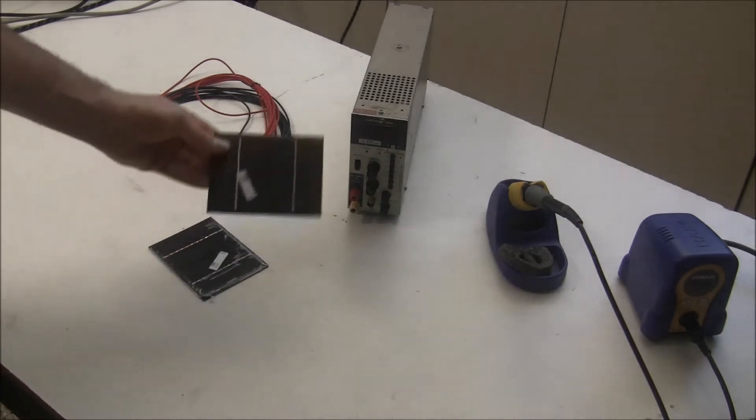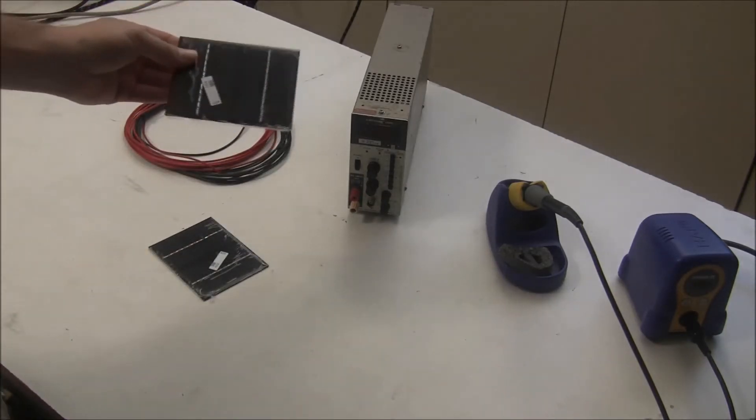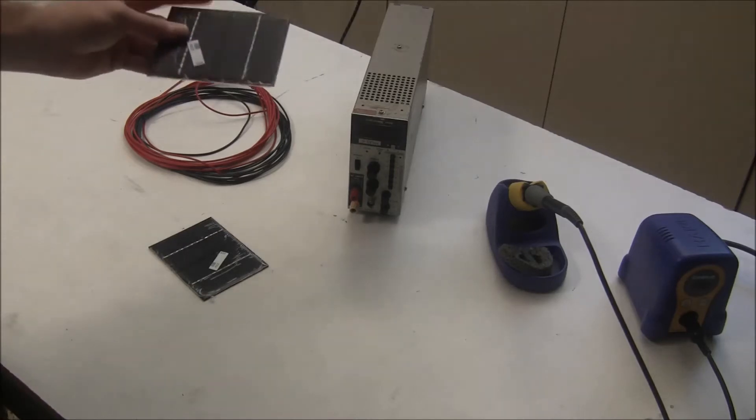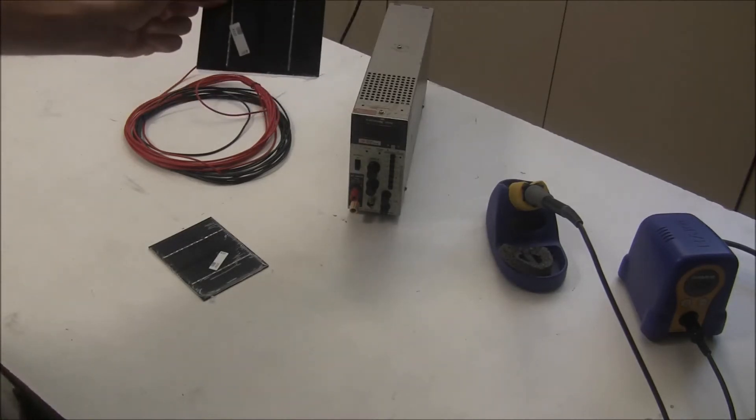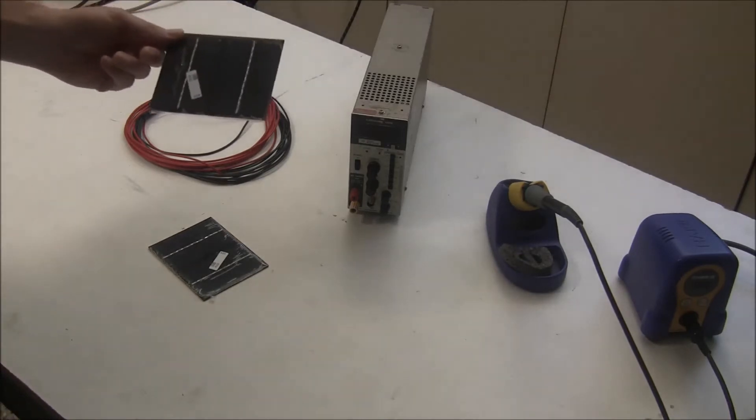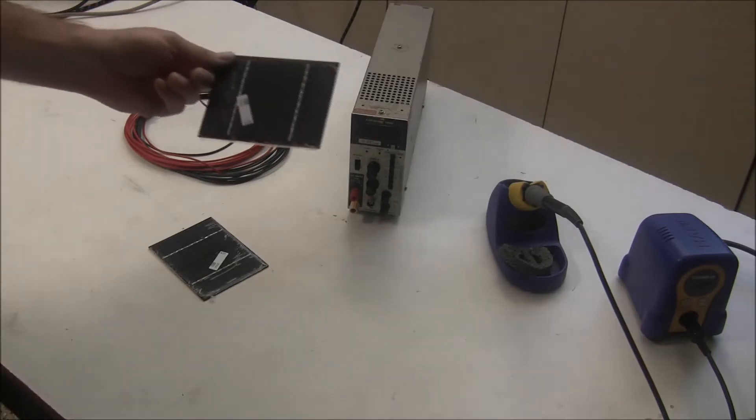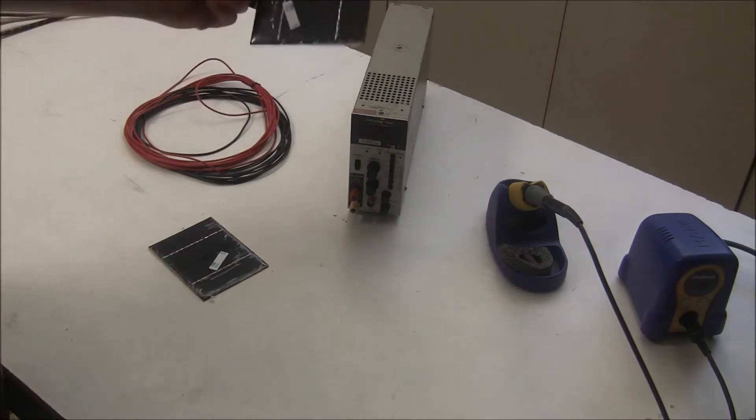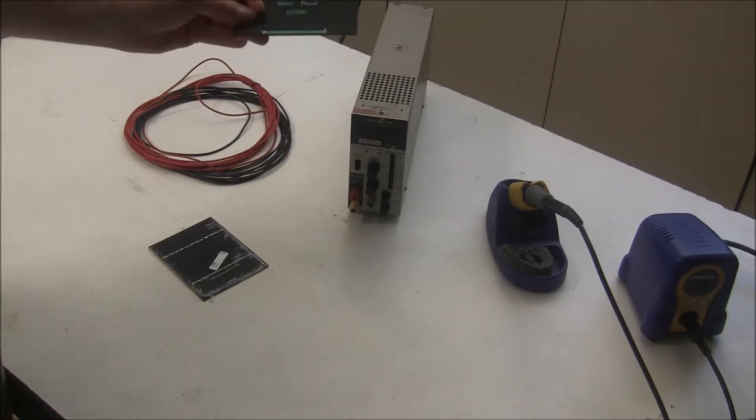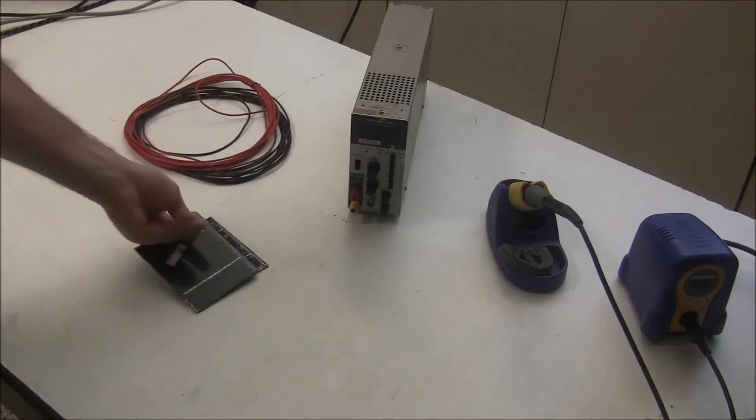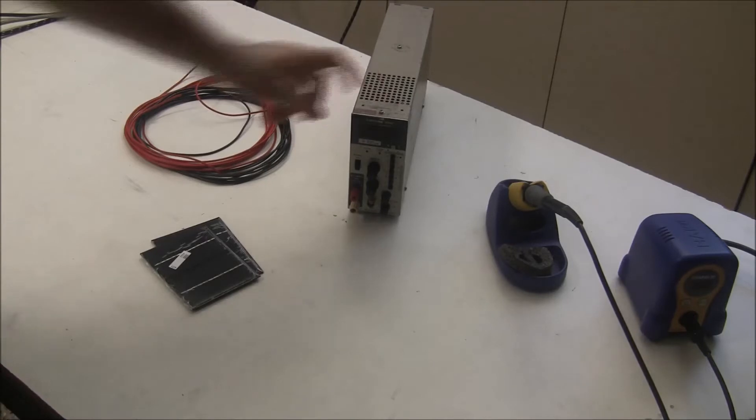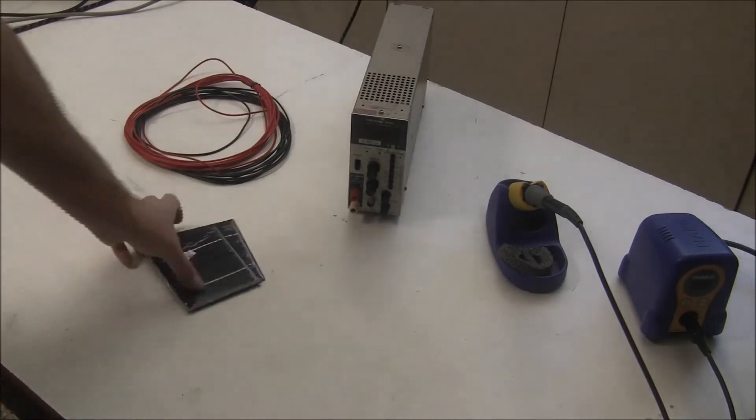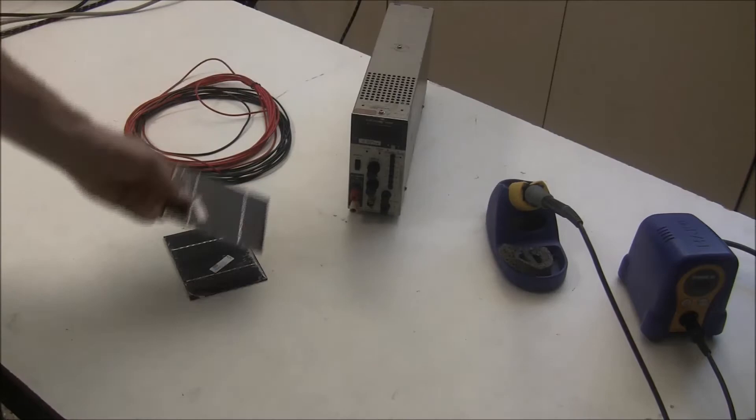I picked up these solar panels on eBay from China and they're fairly small. The seller claims that they are 1.5 watt 12 volt solar panels and I'm a little skeptical. What we're going to do today is wire these up and go outside with this electronic load and test to see if these really meet their rated capacity.